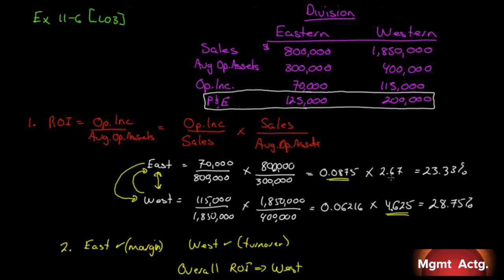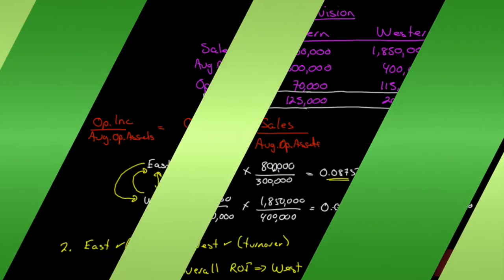Alternatively, it could just be the nature of the business. The East could be very fixed-asset intensive, while the West could be more labor intensive — more labor intensive operations tend to yield a smaller margin but greater asset turnover. There might be a situation to fix, or it might simply be characteristic of the type of business or industry. We only learn this with experience in the real world.